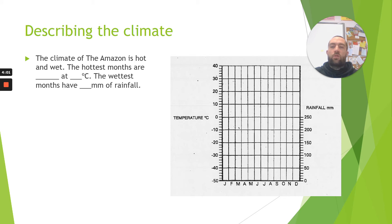So the climate of Amazon is hot and wet. The hottest months are... and we take this data from climate graph and we can put in more than one month here. So we see what the hottest months are and then we see what temperature they are in this bit here. The wettest months have... and then we look at how much rainfall the wettest months have. Again it could be more than one. So if there's two that have 250 millimeters rainfall, that would be the wettest one.